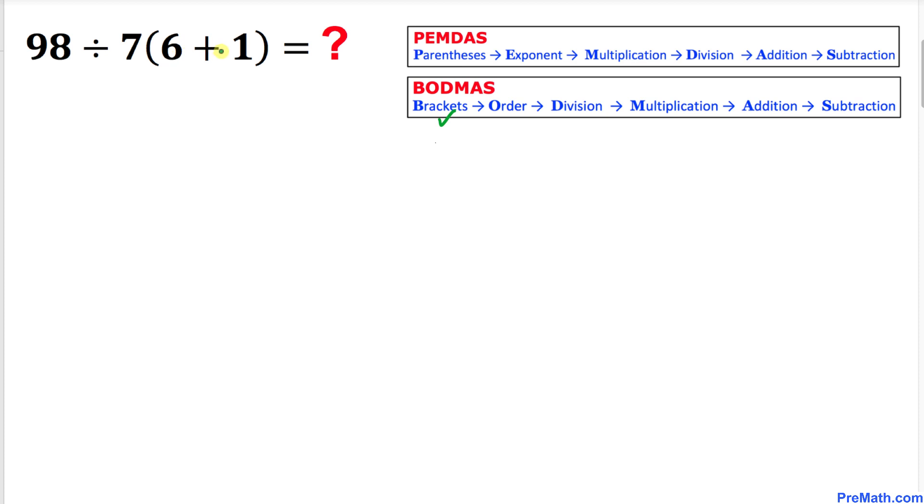So inside this parentheses 6 plus 1 becomes 7. Therefore in this next step this has been simplified to just simply 7 inside the parentheses and now we can write this part as simply 7 times 7. So therefore we can write this problem as 98 divided by 7 and then times 7.